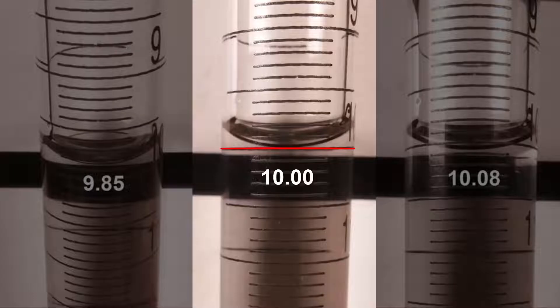Lining up the encircling line closest to the meniscus so that it appears as a solid line ensures that the reading is taken from eye level and avoids parallax error.